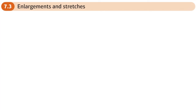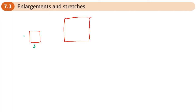This is the third section in the linear transformations chapter and it deals with enlargements and stretches. We know about enlargements — so if a shape had lengths of three and four, then an enlargement of scale factor three would give you nine and twelve. That's what an enlargement does.